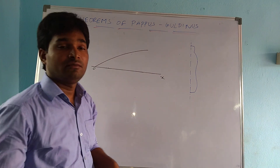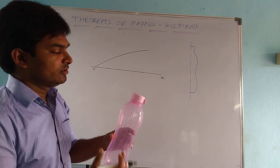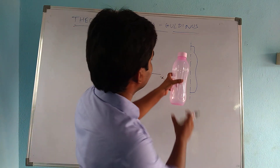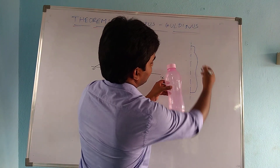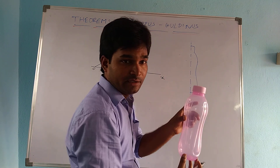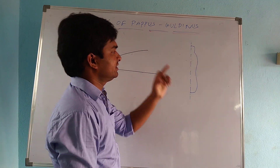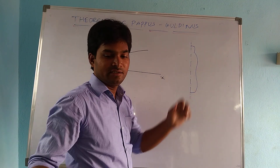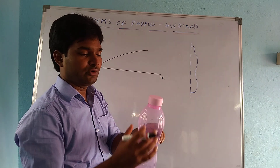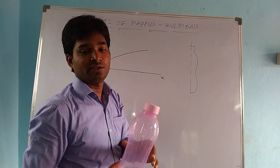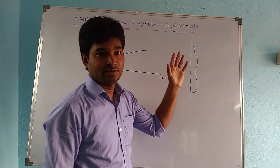For example, we have a bottle, so this is an irregular shape. I am just taking the plane curve of the bottle, and if I rotate this bottle about 360 degrees, I will get a surface like this. So to calculate surfaces like this, we are going to use the Pappus and Guldinus theorems.